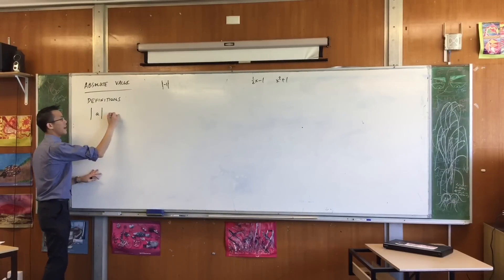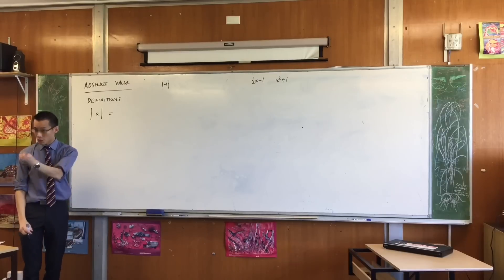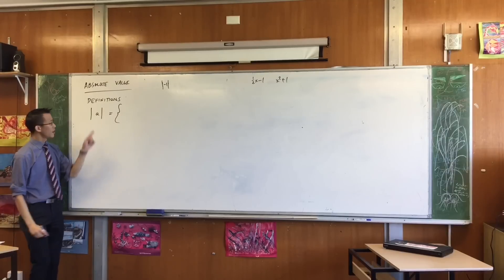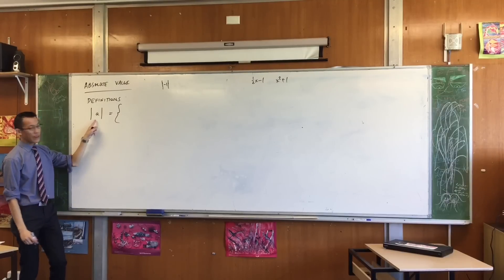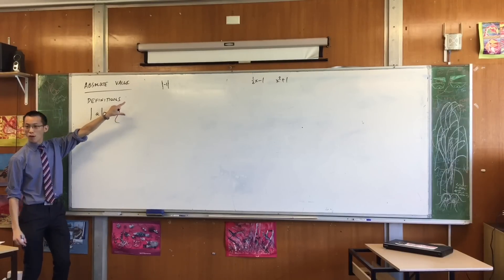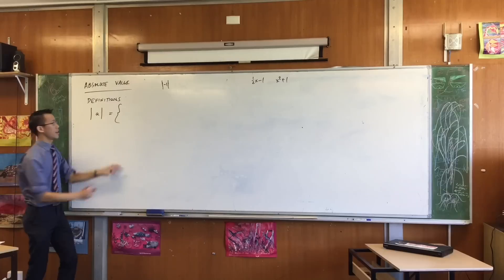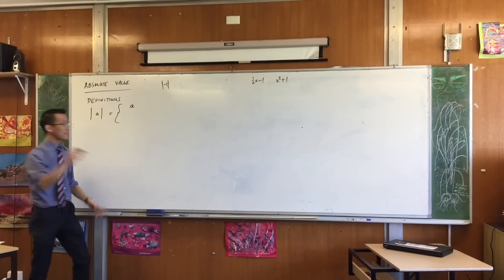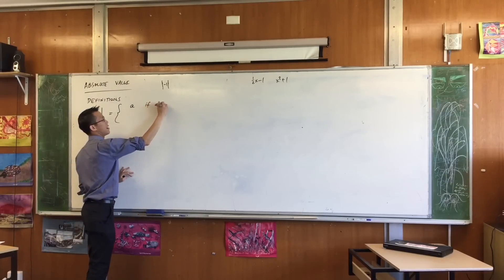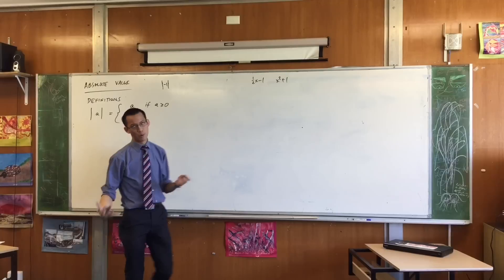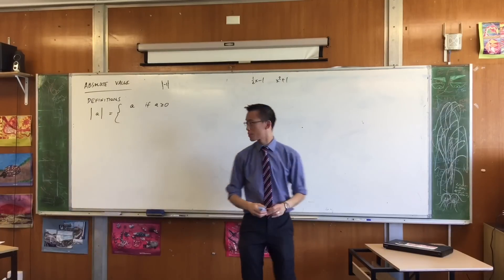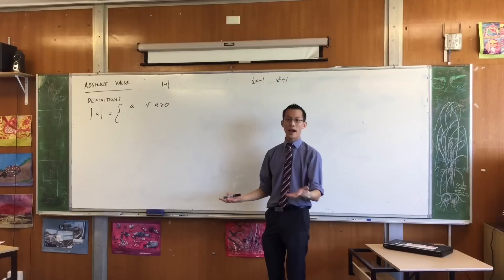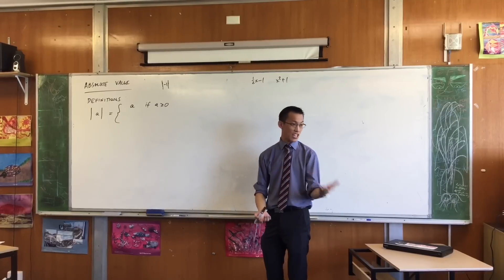The absolute value of A equals — I'm going to introduce some function notation. The absolute value of A can be one of two things. The absolute value of A is just A, if A is positive or zero. For example, the absolute value of five is just five — it's a positive number, it stays positive.